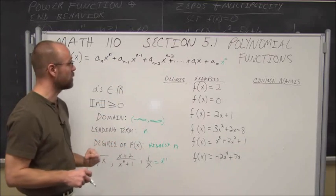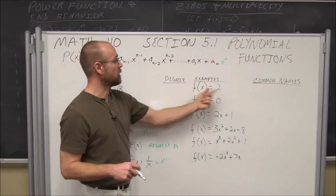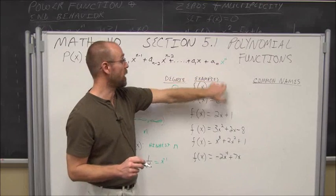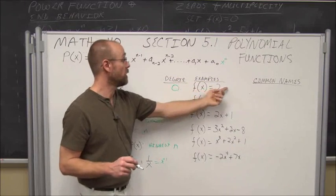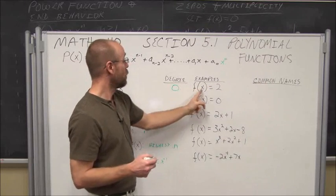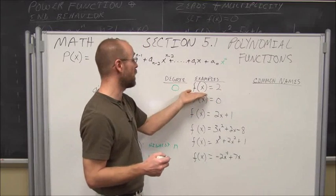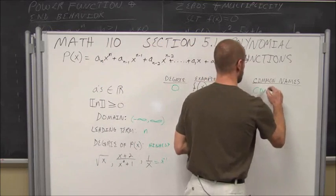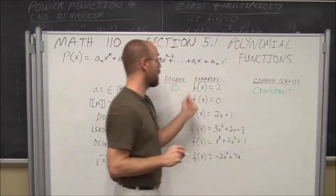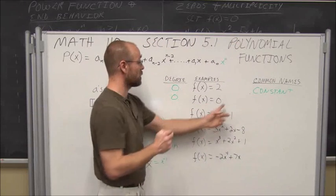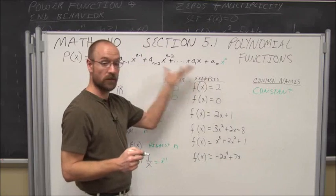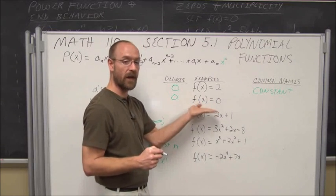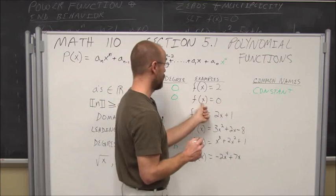Let's talk about the degree of the polynomial further. If f(x) = 2, its degree is 0 — we can write it as 2x to the 0 power. This is a constant function, where y never changes. If f(x) = 0, this is also degree 0 — it's a special constant describing our x-axis where y is always 0. We call this the zero function.